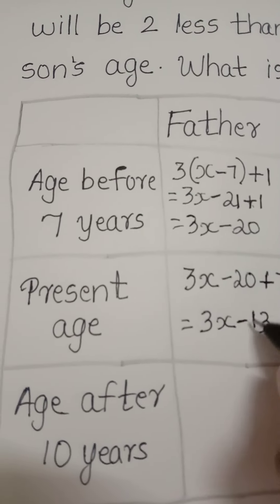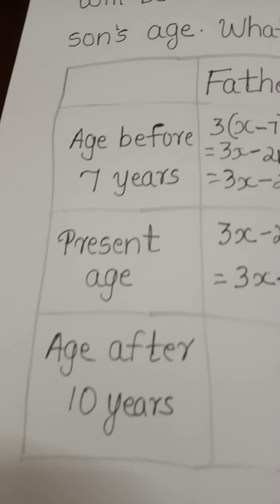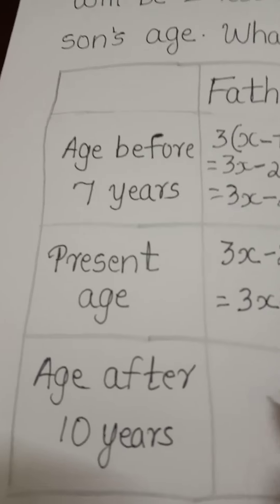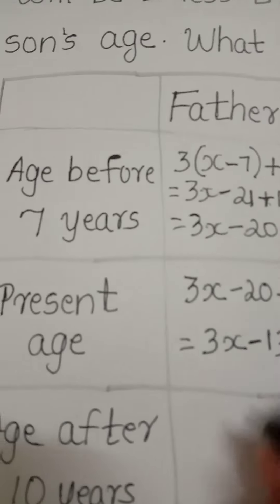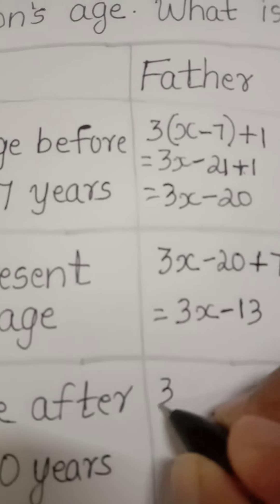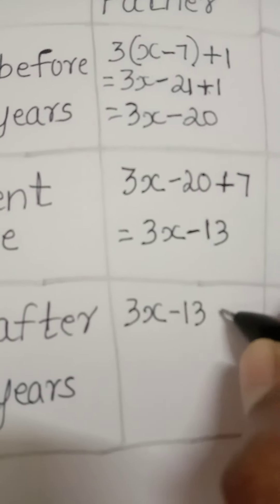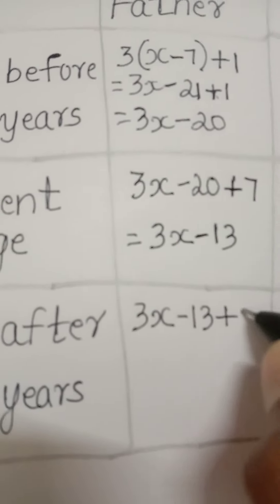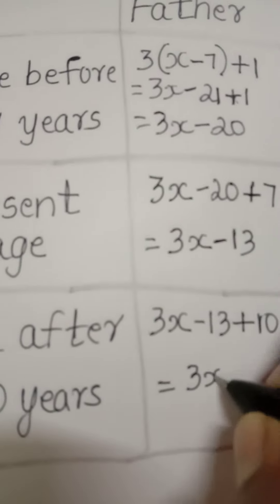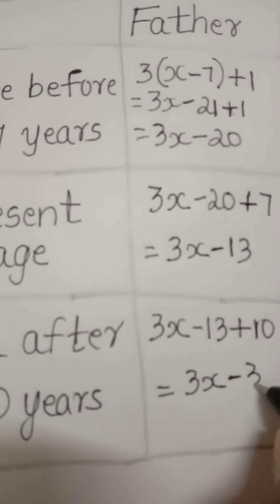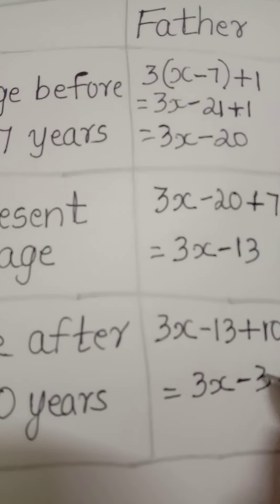That equals 3x minus 13 minus 20 plus 7. The difference is 13, so 3x minus 13. Now, father's age after 10 years will be 3x minus 13 plus 10, which equals 3x minus 3.